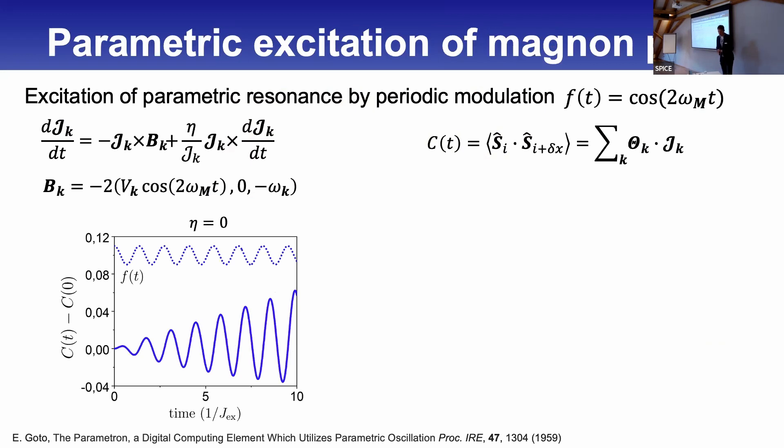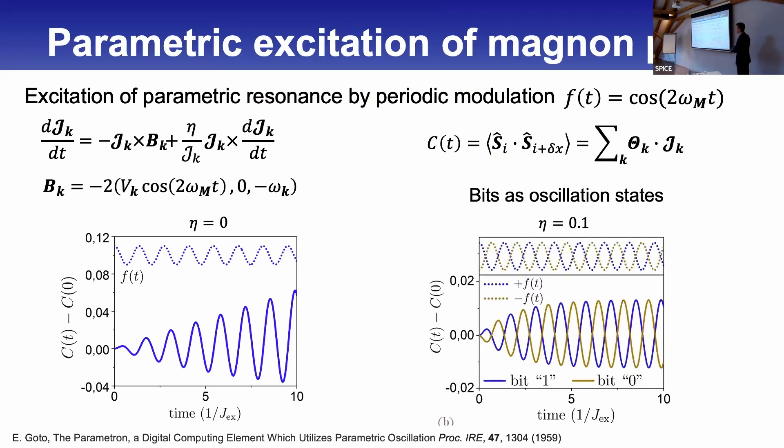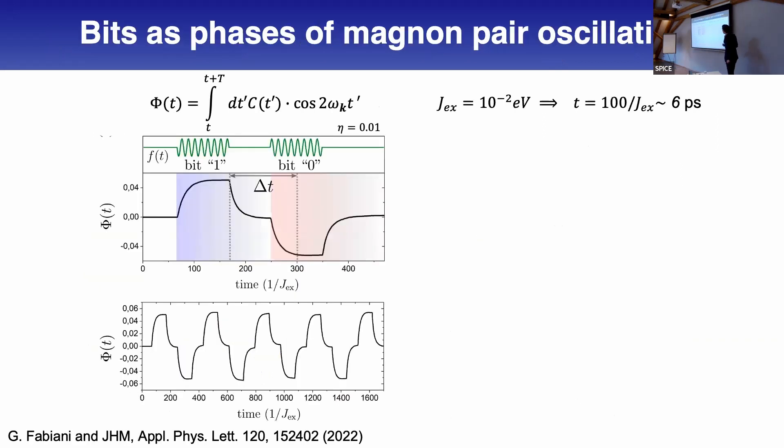Now we want to do the same for these magnon pairs. Employing this semi-classical approach, we find very similar situations. We drive it with twice the magnon frequency at the edge of the Brillouin zone. Without damping we get linear increase, with damping there is nice saturation. The phase of this oscillation remembers the phase of the driving, and that's why we can use these oscillation phases as bits. This was pioneered in the 1950s when it was not yet clear that the transistor would become the dominant computing paradigm.